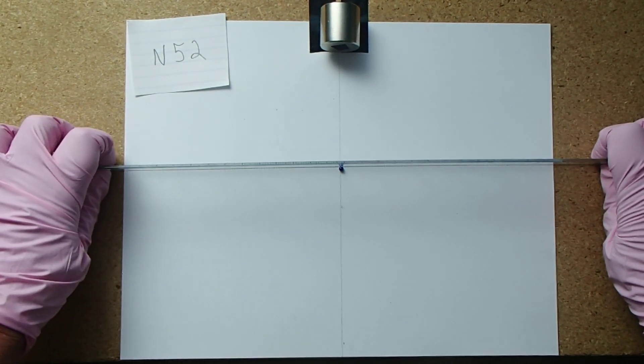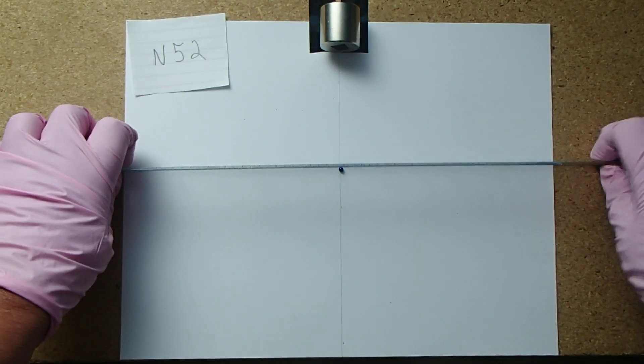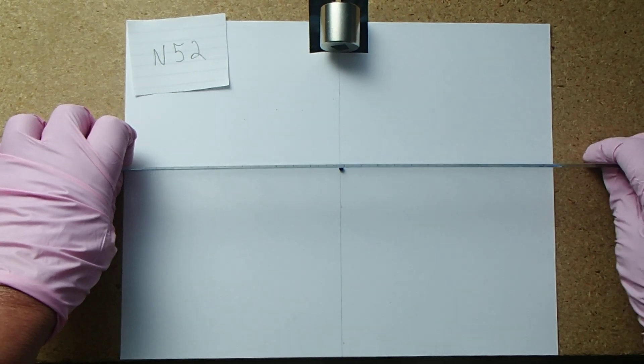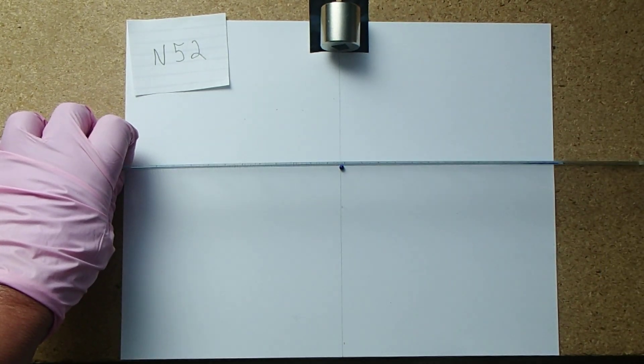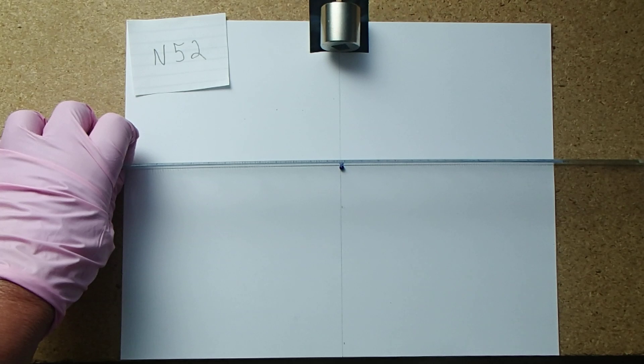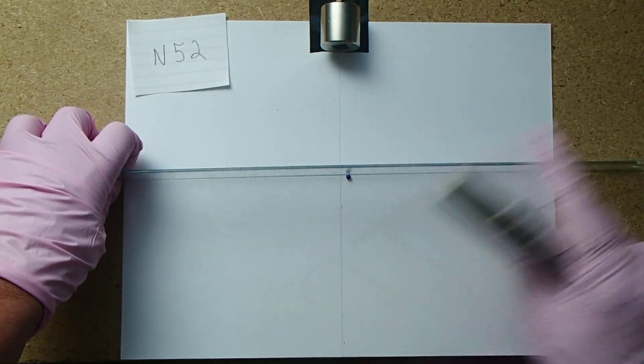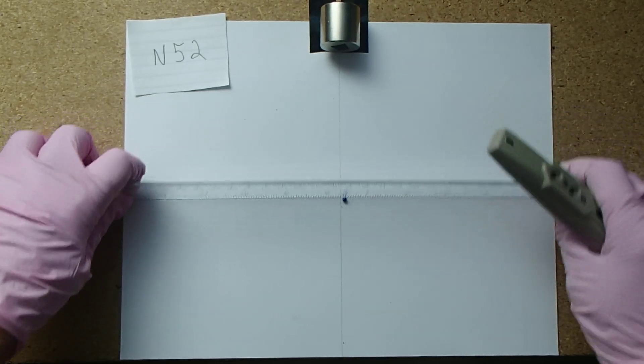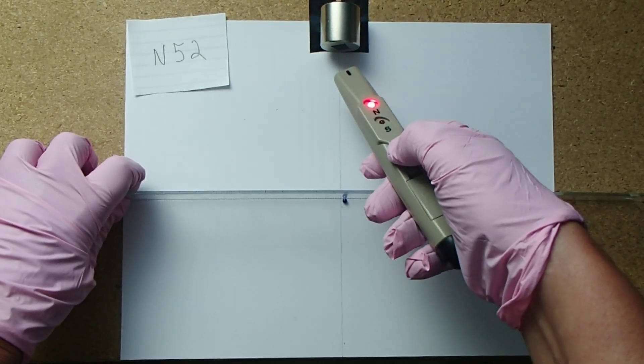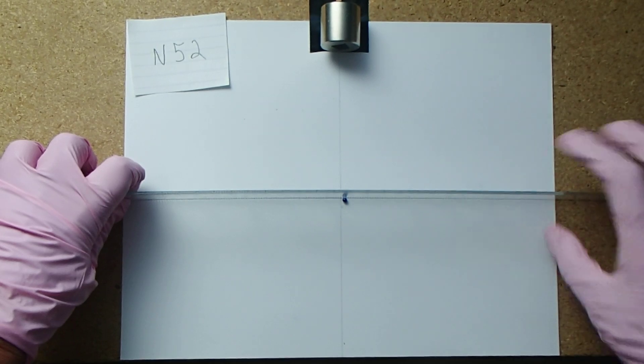So in this experiment, what I want to do is show you that the North Pole has exactly the same reach as the South Pole when looking at one of these small magnets that you can see here. First of all, we're going to test the North Pole.